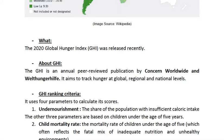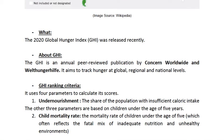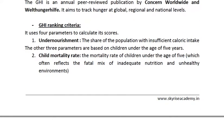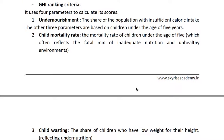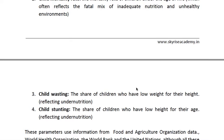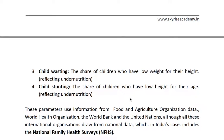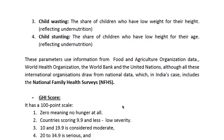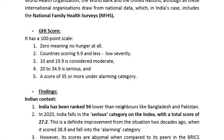The GHI is an annual publication by Concern Worldwide. It aims to track hunger at global, regional, and national levels. It has four parameters: undernourishment, child mortality rate, child wasting — which is when a child has low weight for their height — and child stunting, which is low height for their age.